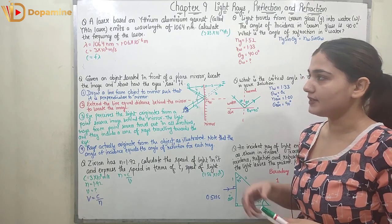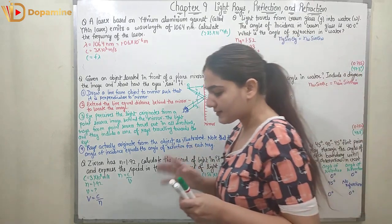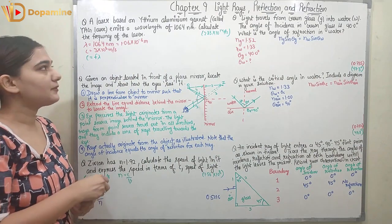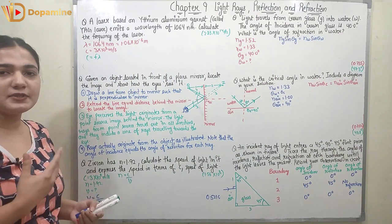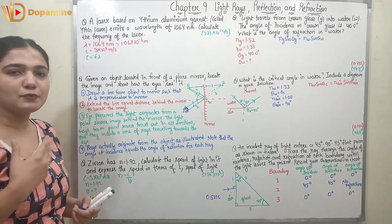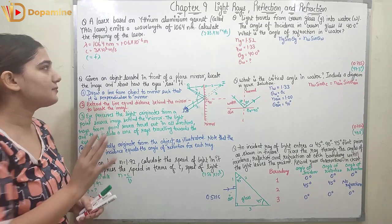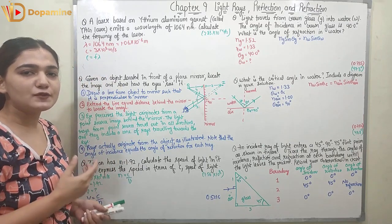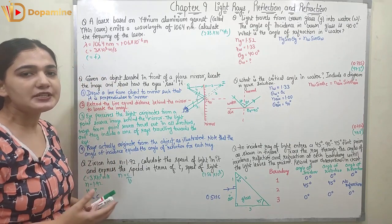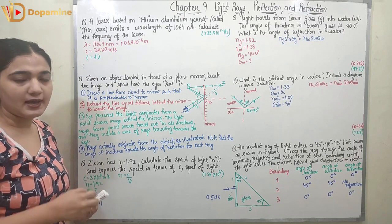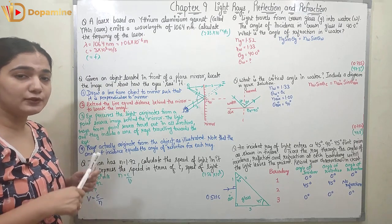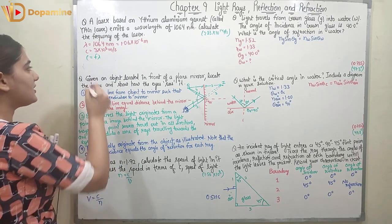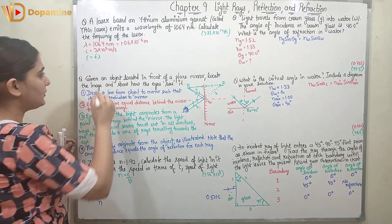Lambda, the wavelength of the light, is given as 1064 nanometers, which can be represented as 1.06 × 10⁻⁶ meters. The speed of light in vacuum is c = 3 × 10⁸ m/s. We know the relation between c, lambda, and frequency: c = f × λ.